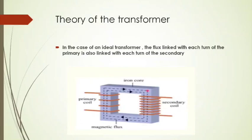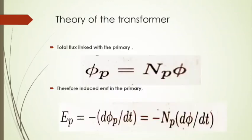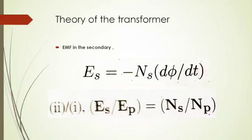In the case of an ideal transformer, the flux linked with each turn of the primary is also linked with each turn of the secondary. The total flux linked with the primary is given by ΦP equal to NP multiplied by Φ. The induced EMF in the primary is given by EP equal to minus dΦP divided by dT. The EMF in the secondary is given by ES equal to minus NS multiplied by dΦ divided by dT.